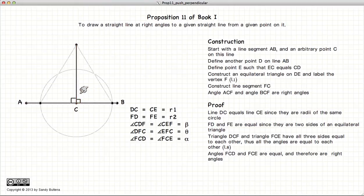And that is how you draw a line perpendicular to AB from a given point C.